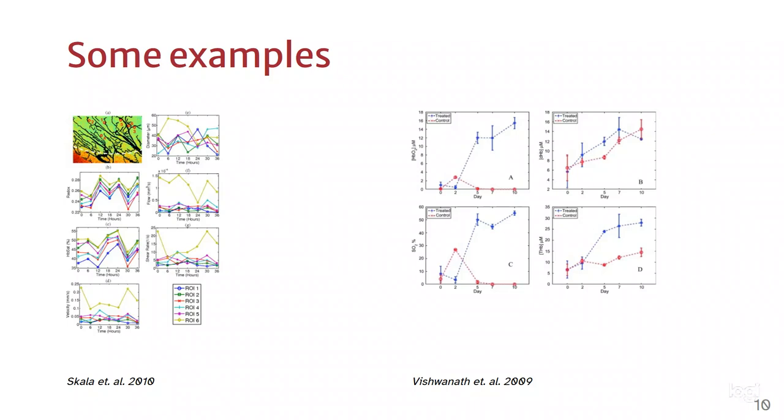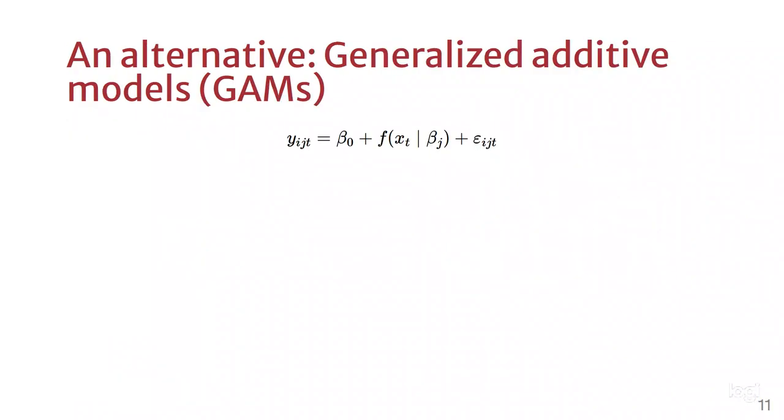If linear models such as repeated measures ANOVA or linear mixed models are limited to analyze this data, what can we use? We can use generalized additive models, or GAMs for short.